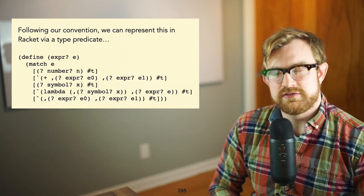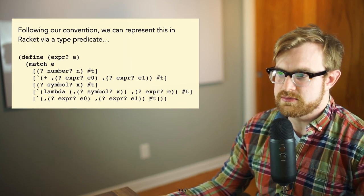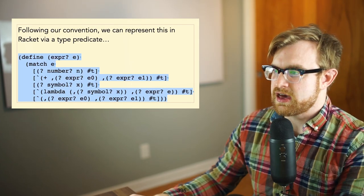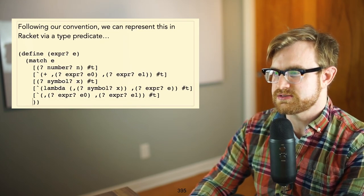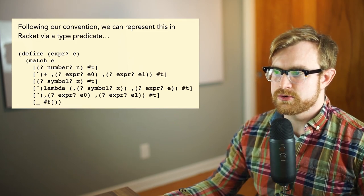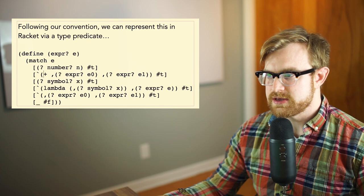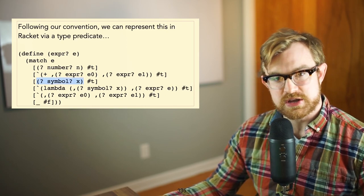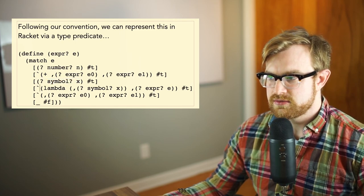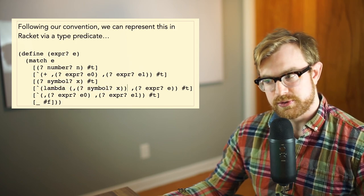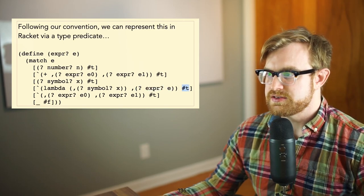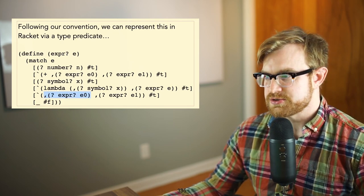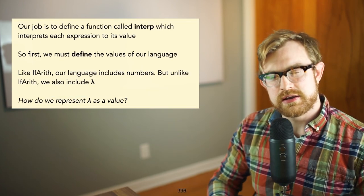Following our class convention, we represent expressions using an `expr?` data type — a predicate that returns true for valid expressions and false otherwise. Numbers are expressions. A tagged list beginning with `plus` followed by two sub-expressions e0 and e1 is an expression. A bare symbol by itself is a variable expression. A tagged `lambda` with a sub-list containing a single variable x (a symbol) followed by an expression body is also an expression. Finally, a call site applying some e0 to an argument e1 is also an expression.